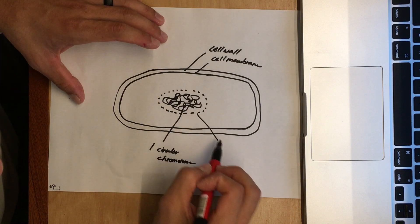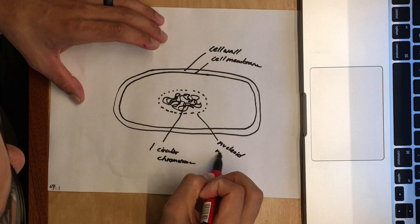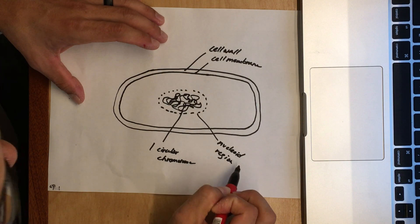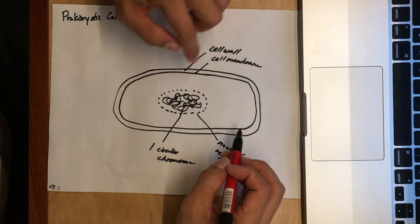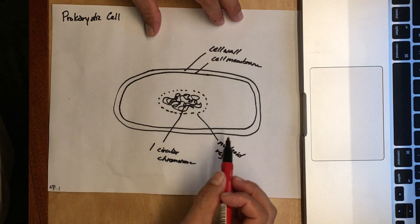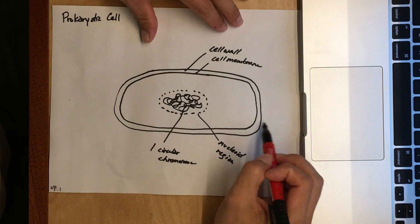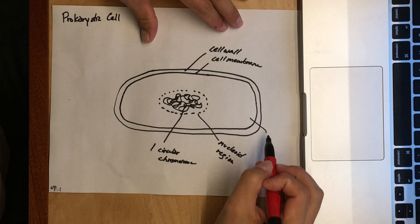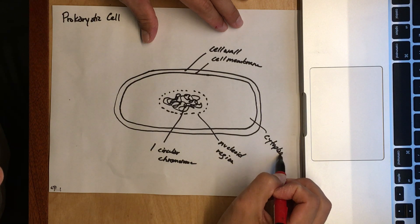...is called the nucleoid region. Inside there is the chromosome, cell membrane, and cell wall. This area is definitely not empty—it's extremely full of things—but it doesn't have any major organelles inside because it is a prokaryotic cell. This is the cytoplasm of that cell.